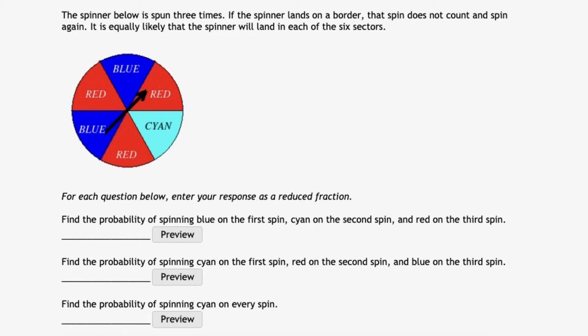Namely, and let me put it into symbols here, to find out the probability of spinning blue on the first spin, cyan on the second, and red on the third, we can look at that first question by doing the following.